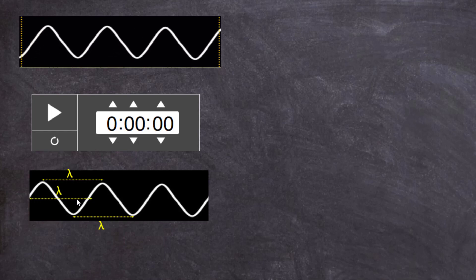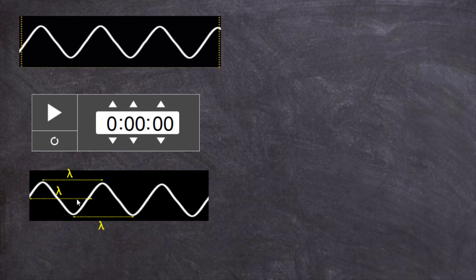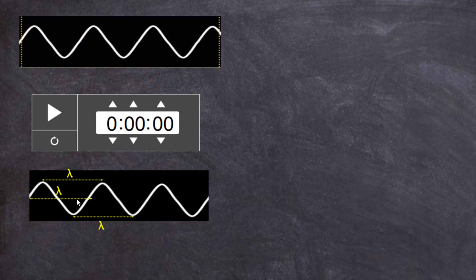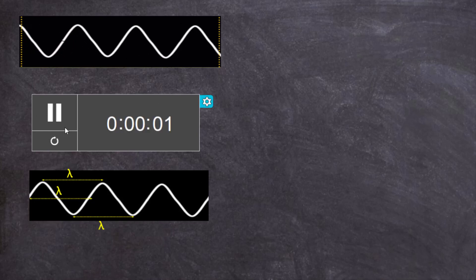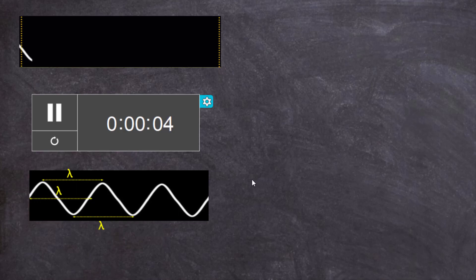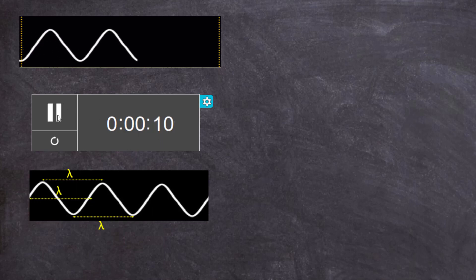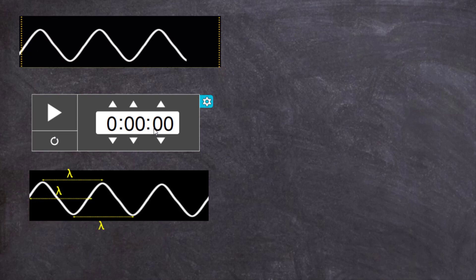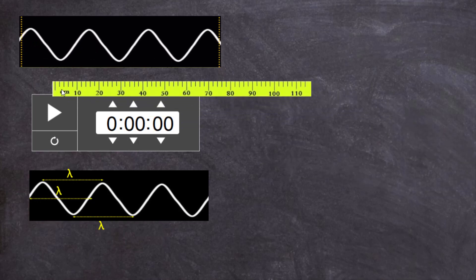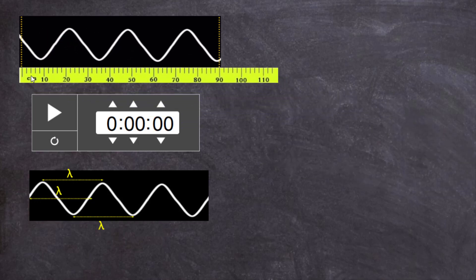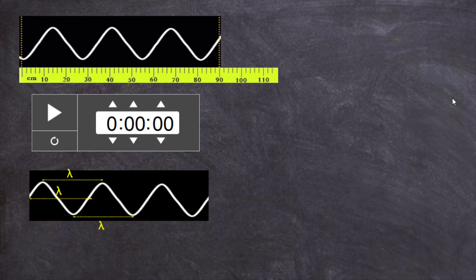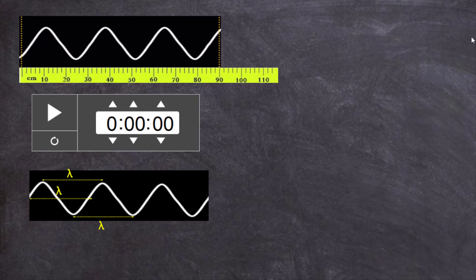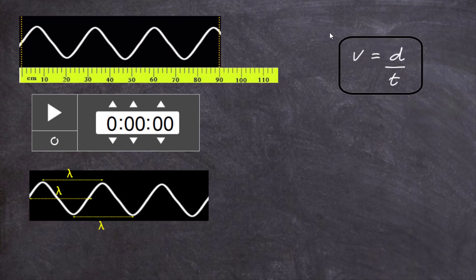We want to find if there's a relationship between the wavelength of a wave and its wave speed. To do that, we look at the moving wave and calculate its speed. We need a stop clock to measure the time it takes for one crest to travel a complete distance, and we also need to measure that distance. Lining up the ruler, the wave travels a distance of about 90 centimeters.